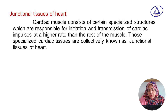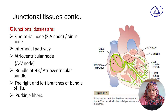Junctional tissues are: the SA node or sinoatrial node, internodal pathway, atrioventricular node, bundle of His, right and left branches of the bundle of His, and the Purkinje fibers.